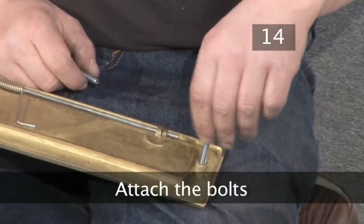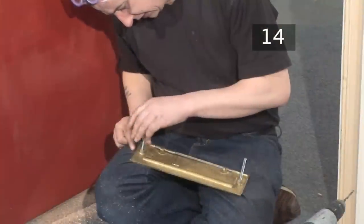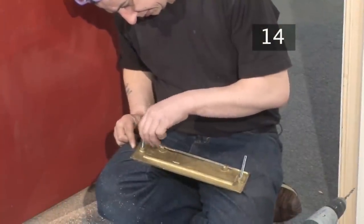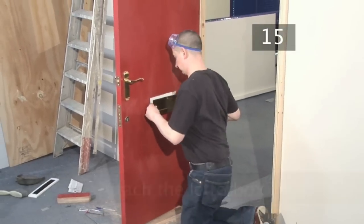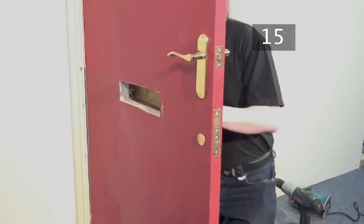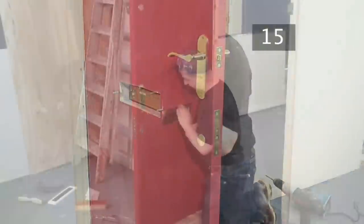Step 14. Attach the bolts. Screw the bolts into the lug holes. Step 15. Attach the letterbox. Slide the bolts through the holes, attaching the letterbox to the side.